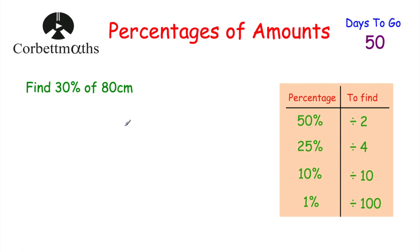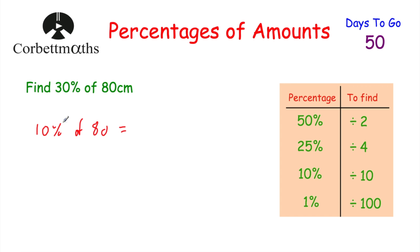The first question says: find 30% of 80 centimetres. If I want to work out 30% of 80, I'm going to think of my key percentages. I think 10% will be useful here, because if we find 10% of 80, we can then add three lots of 10% to get 30%. So let's find 10% of 80: divide by 10, and 80 divided by 10 is 8. So 10% of 80 is 8.